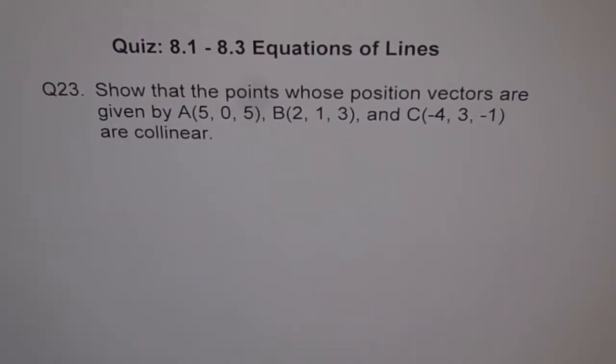Question 23. Show that the points whose position vectors are given by A(5,0,5), B(2,1,3), and C(-4,3,-1) are collinear.